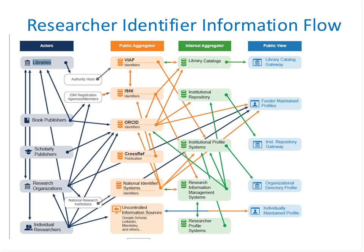A key question is how corrections or updates can be communicated between systems. Researchers are frustrated when they see errors in their profiles, works incorrectly assigned to them, or works missing. Even if the information is corrected in the local instance, it often is not reflected in the aggregated databases or hubs. In brief, there is no one system that includes all researchers nor meets all the functional requirements of all stakeholders. Assigning persistent identifiers to researchers early in their careers will help both researchers and their institutions compile their scholarly output more comprehensively and accurately.